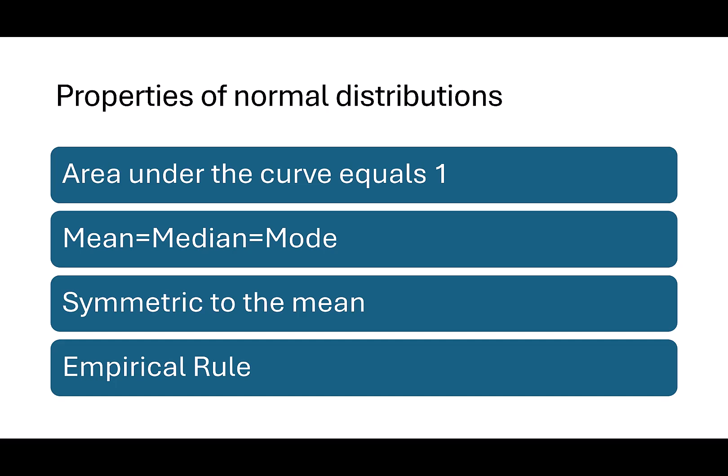Some properties of normal distributions that you want to get familiar with include that the area under the curve is always equal to 1. The mean, the median, and the mode are all equal and are the highest value of our curve.